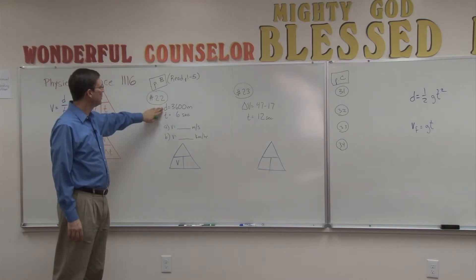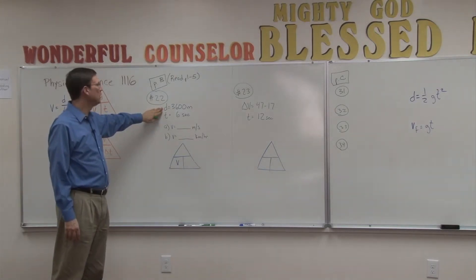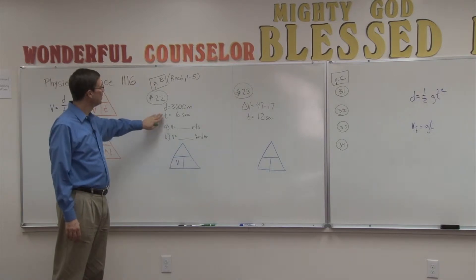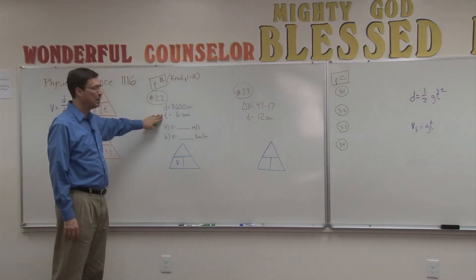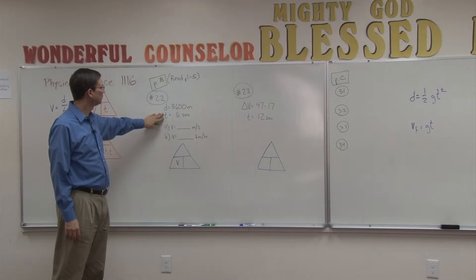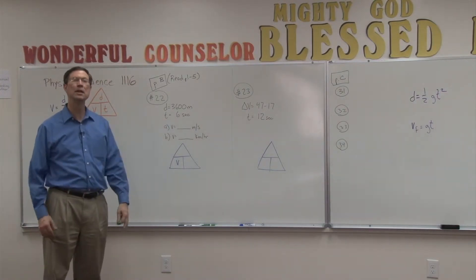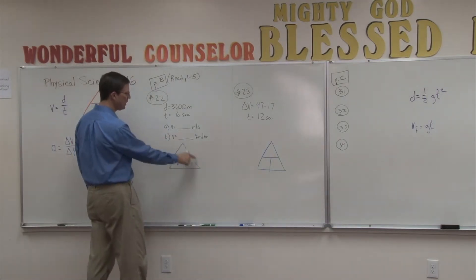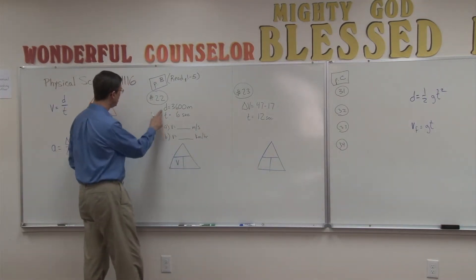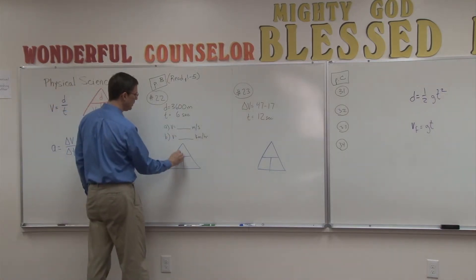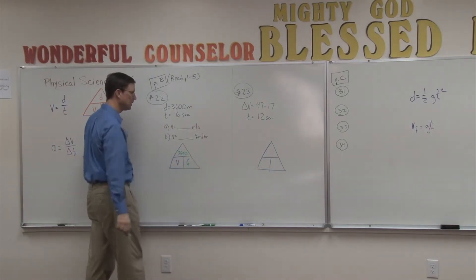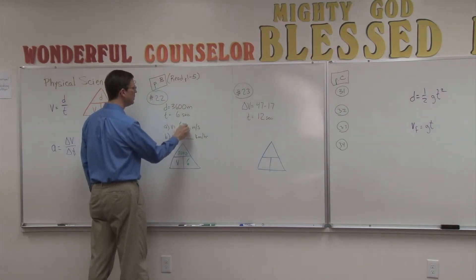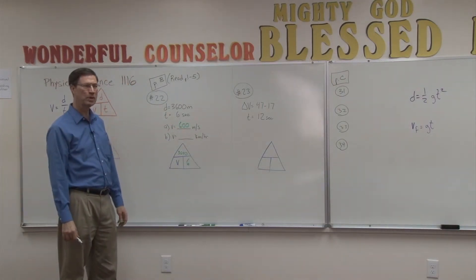In that problem, it gives us the distance is 3,600 meters. It tells us that the change in time is 6 seconds. And it asks the question, what is the velocity in that time? So here's all we have to do. I have a blank magic triangle. Distance is going to go in the top. So I'm going to write the 3,600 up here. I'm going to divide by the time, which is 6 seconds. And so the answer comes out to be 600 meters per second. Pretty easy.